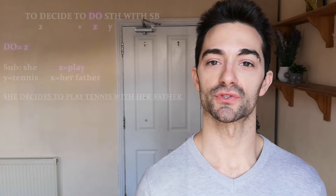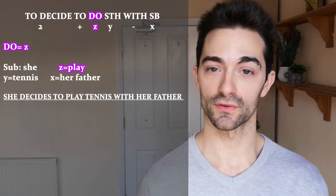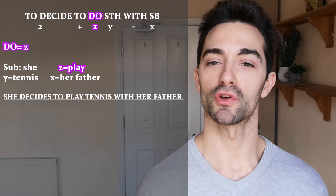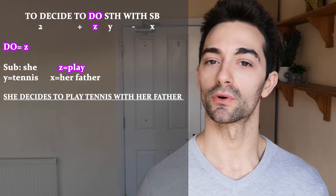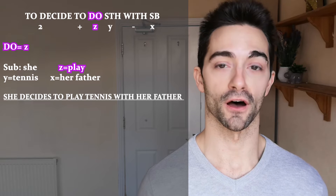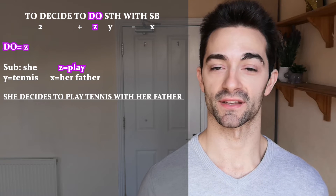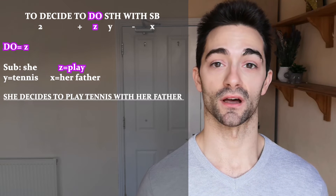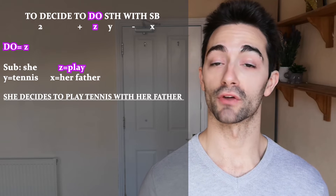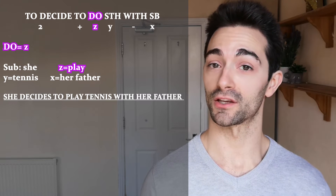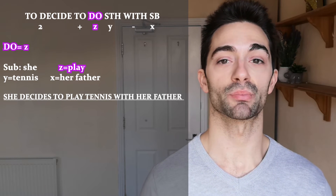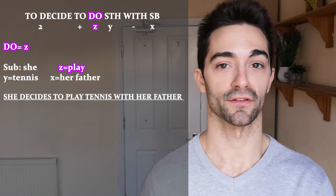If we look at the structure 'to decide to do something with somebody', we notice that we have a new variable — do — which we will call z. Do represents the verb that we can put inside the structure, so I can decide to play, to sing, to run. So if you follow the values on the slide, you will get: she decides to play tennis with her father.